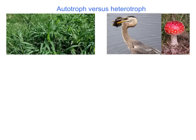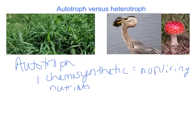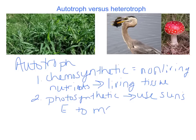For nutrition, organisms are either autotrophs or heterotrophs. An autotroph makes its own food, a heterotroph needs food from a different source. There are two kinds of autotrophs: a chemosynthetic autotroph takes non-living nutrients like sulfur or iron and converts them into living tissue, making food from these minerals. A photosynthetic autotroph uses the sun's energy to make its own food, converting solar energy into organic compounds.